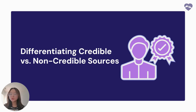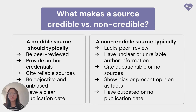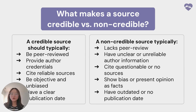Let's now discuss how to differentiate between credible and non-credible sources. A credible source has certain qualities: it's typically peer-reviewed, meaning experts have assessed its accuracy and validity. It also provides author credentials, always cites reliable references, and strives to be objective and unbiased. Lastly, credible sources have a clear publication date, which you can use to ensure the information is current and relevant. A non-credible source, on the other hand, may lack peer review, contain unclear or unreliable information, cite questionable or no sources at all, present opinions as facts, or have outdated information — or worse, no publication date at all.